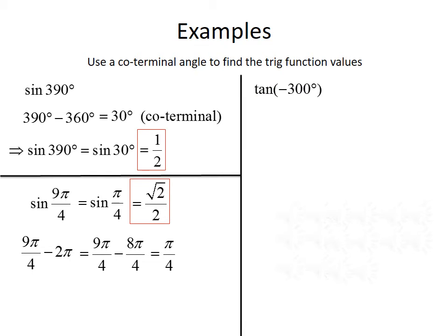Finally, we want to find the tangent of -300 degrees. Since -300 is less than our range of 0 to 360, we add 360. So our coterminal angle is -300 plus 360, which gives 60 degrees. The tangent of -300° equals the tangent of 60°, which is √3.